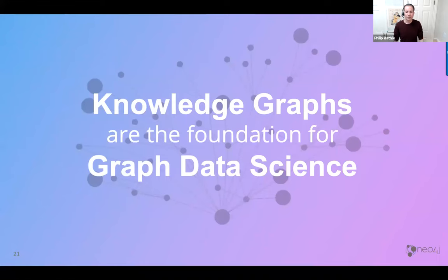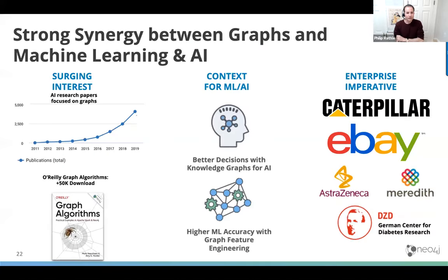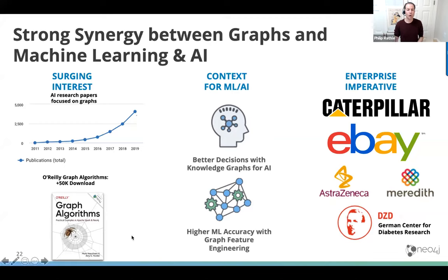Increasingly, if you look at the number of academic research papers on AI focused on graphs, it's skyrocketed. There's a lot of increased interest in understanding connections and feeding that into machine learning. We co-authored an O'Reilly book filled with examples for both Neo4j and Spark, which has had over 50,000 downloads — a pretty popular topic. This is predicated on the notion, quoting sociologist James Fowler from the book 'Connected', that you can make better predictions about people by understanding their friends and friends-of-friends than from information about the people themselves.